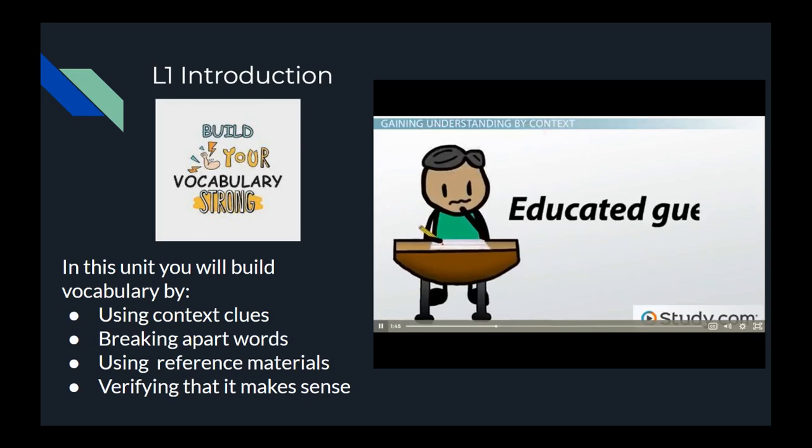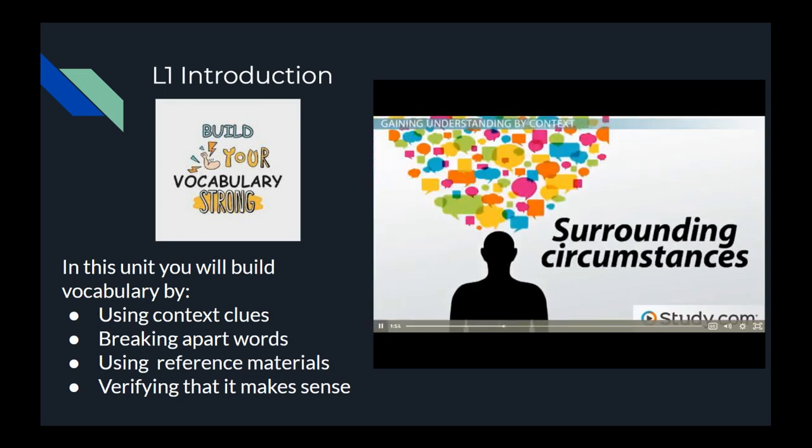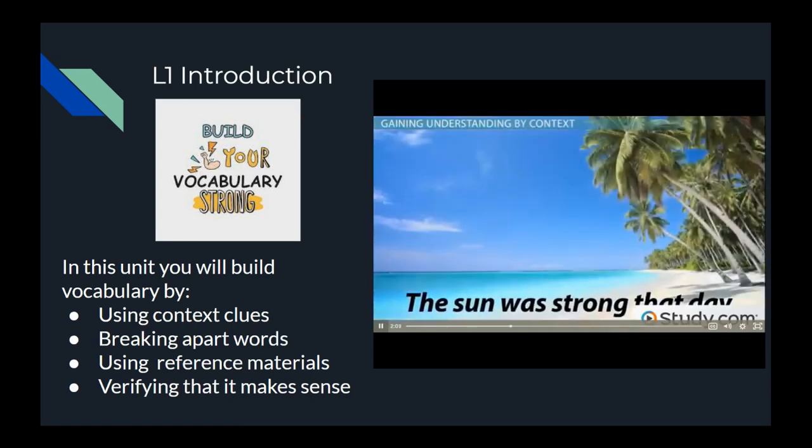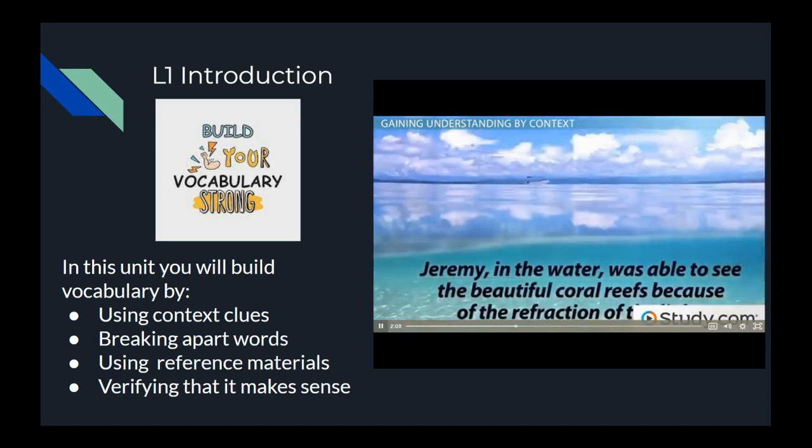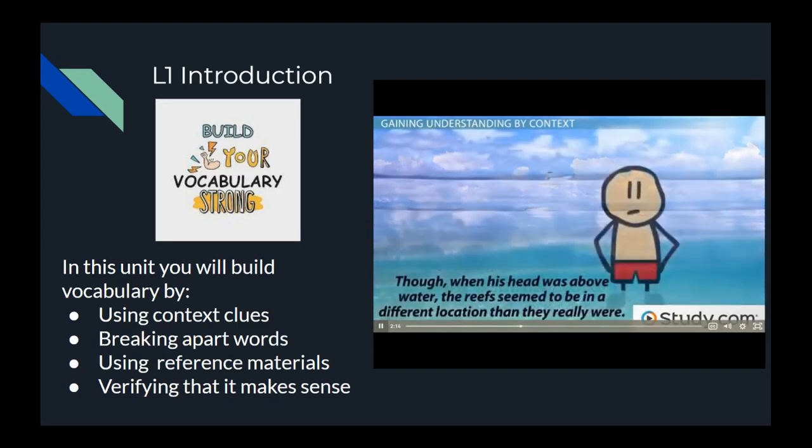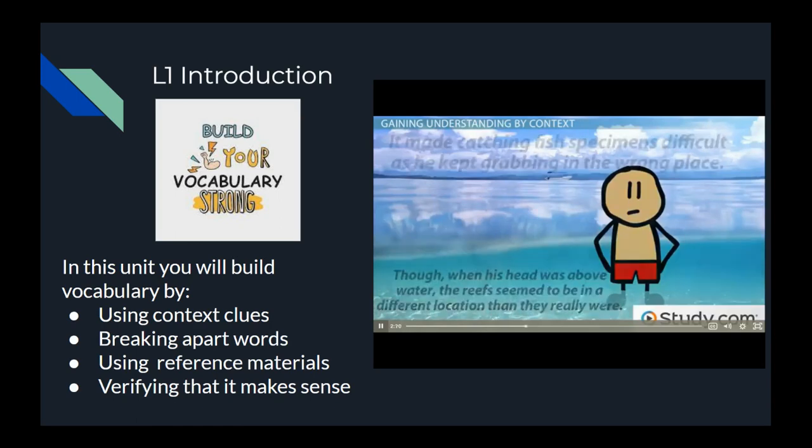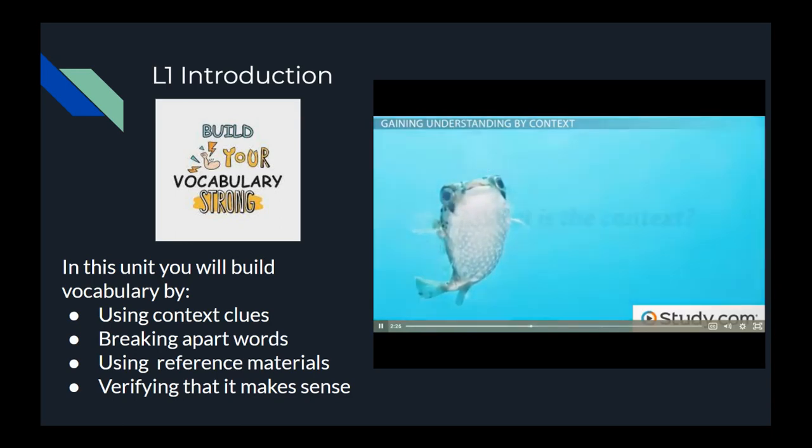It is important to learn how to make an educated guess on the meaning of a word you don't know based on the context. Context is the surrounding circumstances that help us fully understand the text. Let's look at the following text and figure out what the word 'refraction' means. The sun was strong that day. To Rob in the boat, the reflection of the water was blinding. Jeremy, in the water, was able to see the beautiful coral reefs because of the refraction of the light. Though when his head was above water, the reefs seemed to be in a different location than they really were. It made catching fish specimens difficult as he kept grabbing in the wrong place.